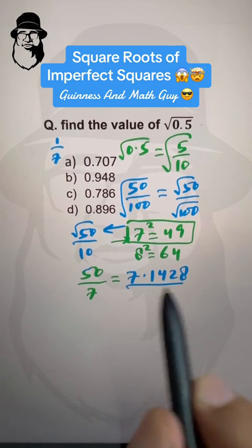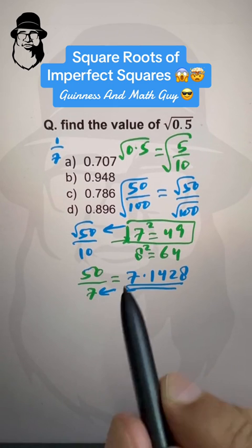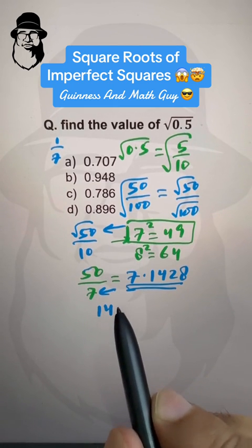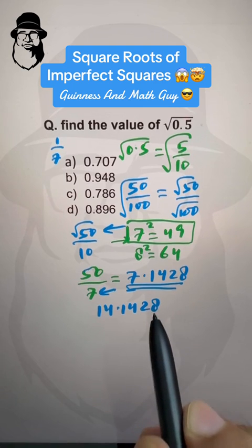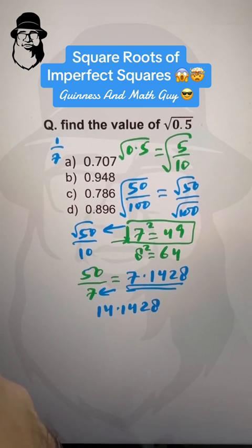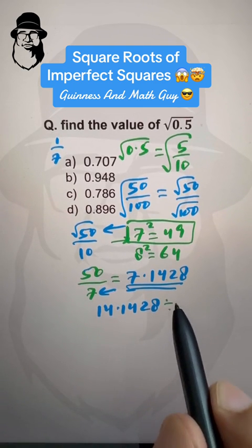we add this by this, 7 plus 7 is 14.1428, and then, the last step,